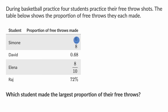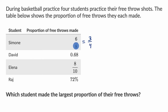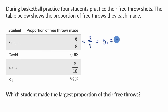Let's start with six-eighths. Before I even try to express it as a decimal, I can recognize that that is the same thing as three-fourths. Both six and eight are divisible by two, so I'm gonna divide them both by two, and I get three-fourths. And three-fourths, you might recognize, is the same thing as 0.75.